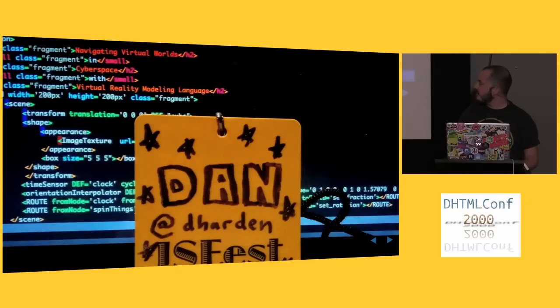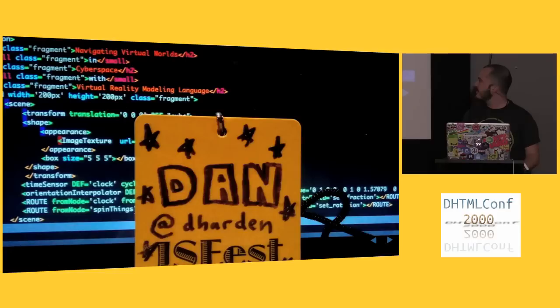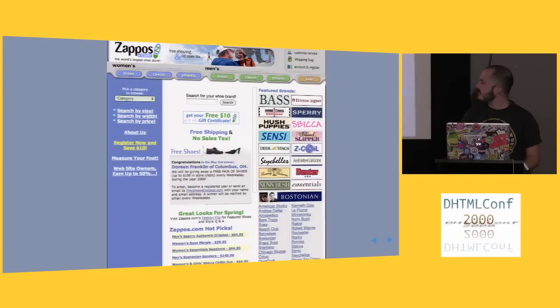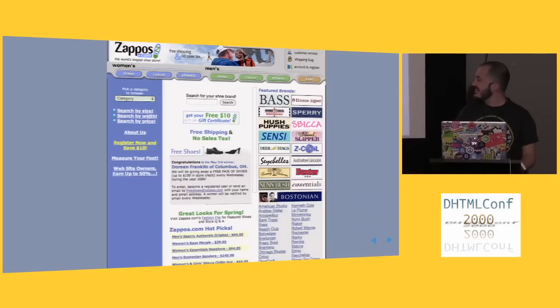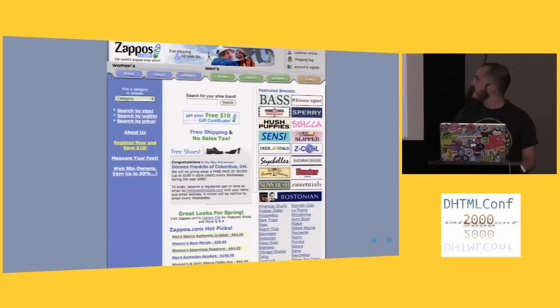I'm Dan. I couldn't think of a good slide, so here's my badge. I'm dharden on Twitter. Feel free to follow me. Or don't. I work for Zappos.com, like Pavel, in the spirit of DHTML.com. Here's a screenshot from the year 2000 of Zappos.com. This is real. I think it was ASP Classic or something at the time. I didn't work there - I take no responsibility for anything on this image.